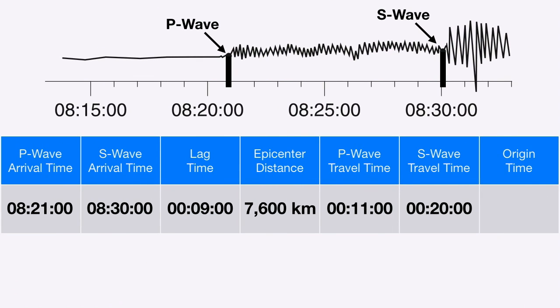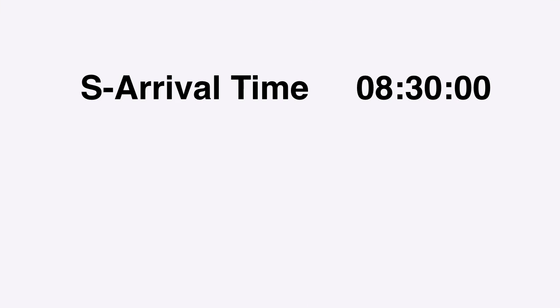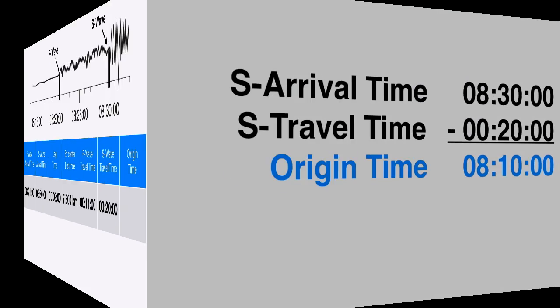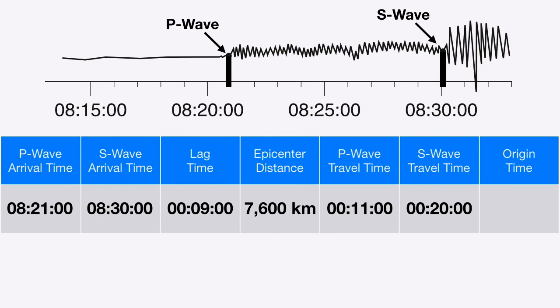Theoretically, if I do this with the S arrival and travel, I should get the same time. The S wave arrives at my house at 8:30 after traveling for 20 minutes. S arrival minus S travel gives me an origin time of 8:10 — the same as when I did it with the P waves. So I know that the earthquake happened at 8:10.